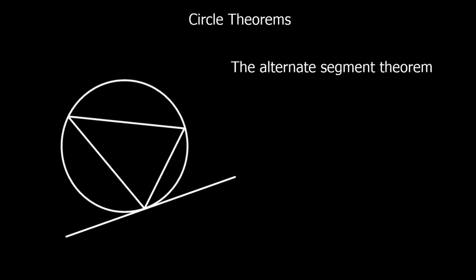And finally, the alternate segment theorem. This is when we have a triangle in a circle, and this angle here is equal to the opposite, alternate one. So it's equal to this angle here, and this one here is equal to this one here.